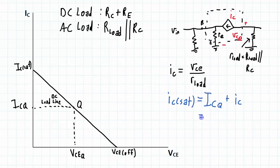Which is equal to ICQ plus VCE over R load, as I've indicated here. And since I know that R load — which is the external R load in parallel with RC — is going to be less than RC plus RE,